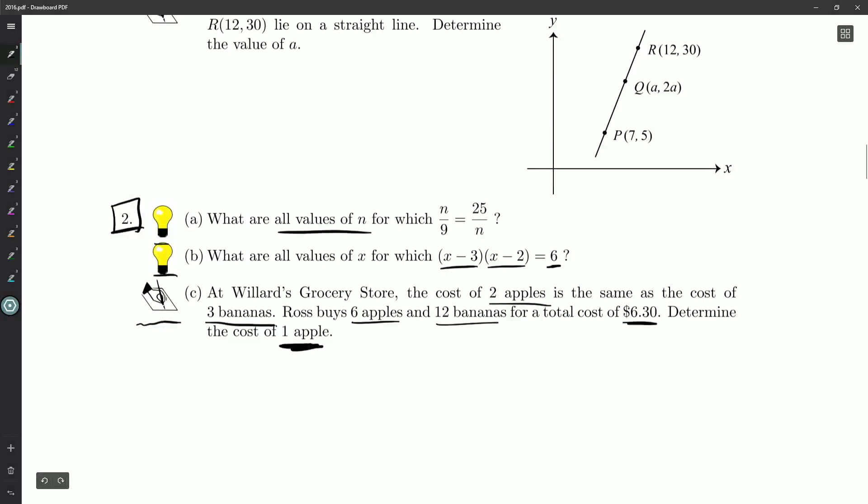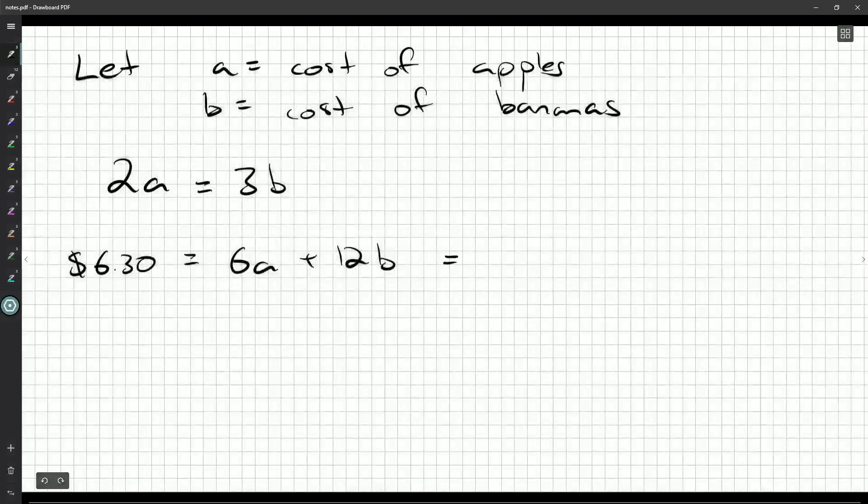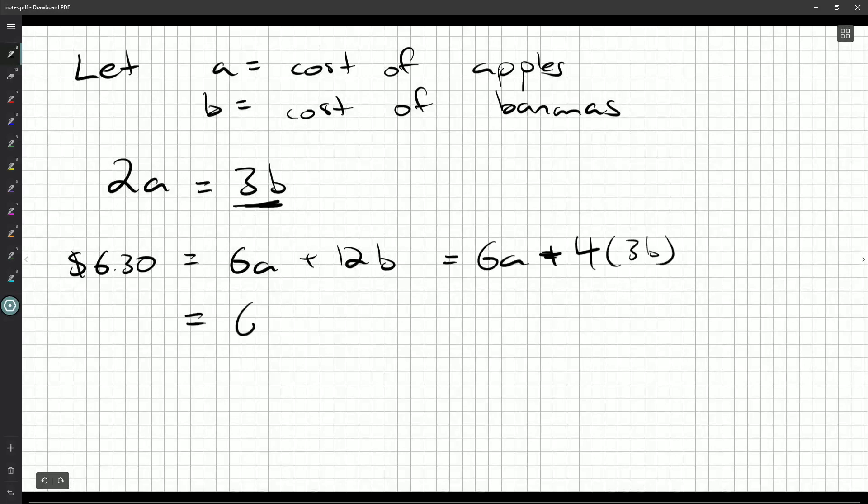All we care about is the cost of one apple. So if we turn everything into apples, all these 12 bananas, turn them into apples, we should be able to get just a single equation involving A. So 12 bananas, I'm going to write that in terms of three bananas a piece. So that's four times three bananas. And then I know I can change three bananas into two apples. So we get 6A plus 8A, 14A.